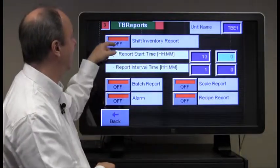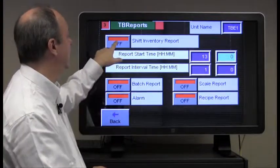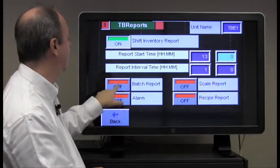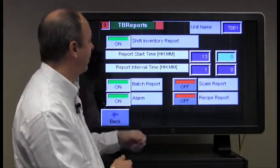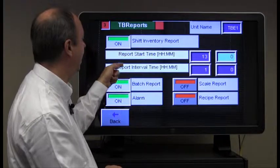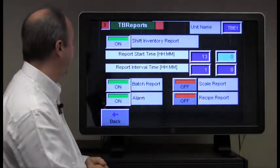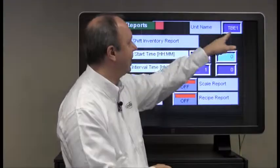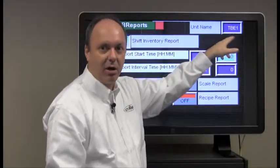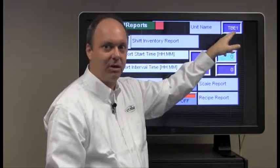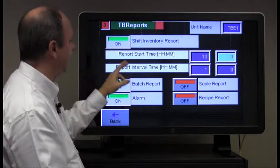this is where you come in and tell it what you want to go out onto TrueBlend Reports. The shift inventory, maybe a batch report, the alarms, recipe reports, and then the start time and the interval that you want this stuff to occur. And you can even change the name of the unit. So if this is Blender number one on line one or Blender number two on line three or whatever, then you can edit that as well. So that's TrueBlend Reports.